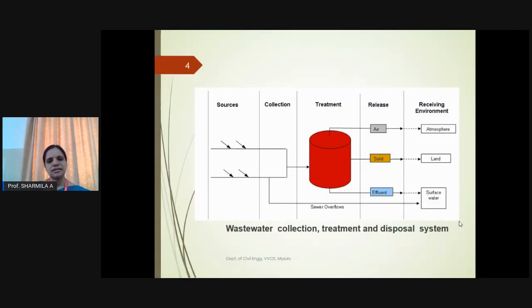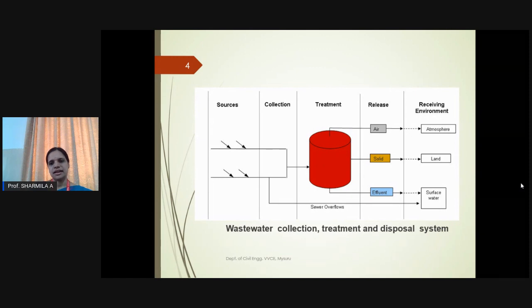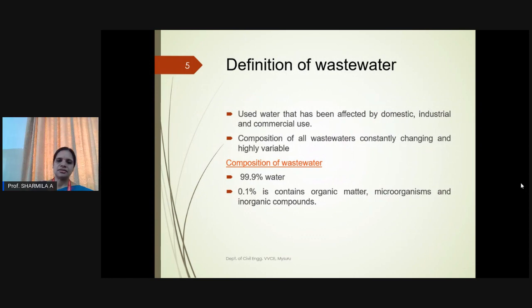First and foremost, let us understand how wastewater will be generated and what is the fate of wastewater. From the source, the wastewater is collected through the sewerage system, treated, and released to either air, solid form, or as effluent to the atmosphere, land, and surface water. Wastewater is any used water that has been affected by domestic, industrial, or commercial uses, and its composition varies depending on the source and activity.